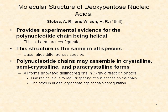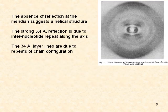Additionally, this research demonstrates that polynucleotide chains may assemble in crystalline, semi-crystalline, and paracrystalline forms — all forms with two distinct regions in X-ray diffraction photos. One region is due to regular spacing of nucleotides on the chain configuration, and the other is due to longer spacings of chain configuration.